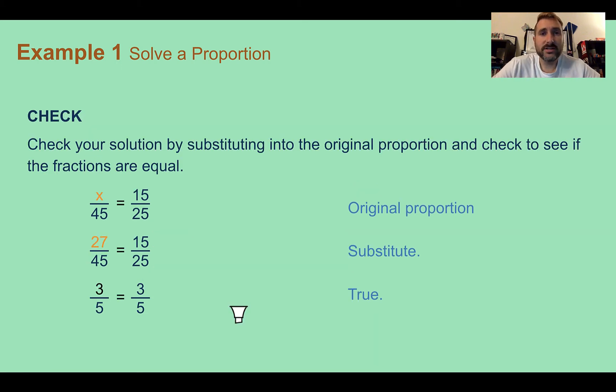We should always check our answer. So if we plug in what we got, if x is 27, when we do these to check, we can just reduce the fraction. So if I were to divide 27 and 45 by 9, I get three-fifths. If I were to reduce 15 twenty-fifths and divide both things by 5, I also get three-fifths. So reducing the fraction showed us our equation was true. So 27 must have been our correct answer.